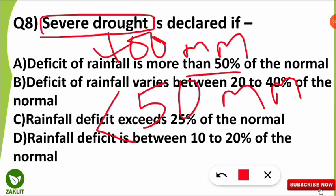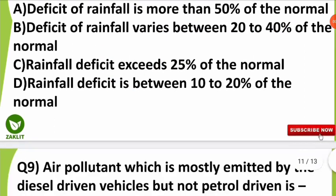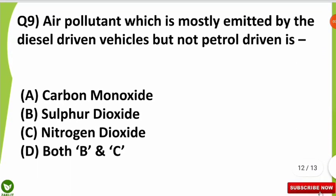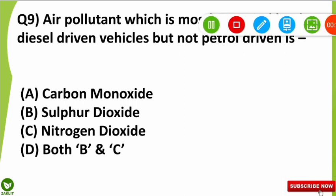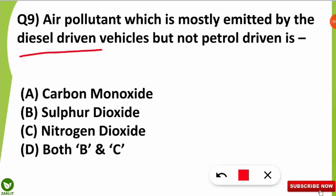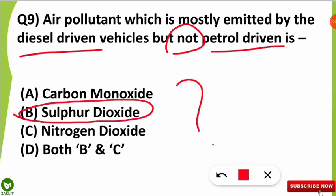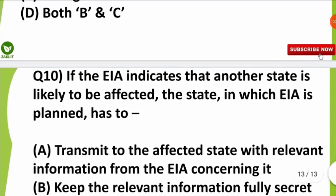The ninth question was: which air pollutant is mostly emitted by diesel-driven vehicles but not by petrol-driven vehicles? The correct option is sulfur dioxide (SO₂). SO₂ is the pollutant mostly emitted by diesel-driven vehicles but not from petrol-driven vehicles.